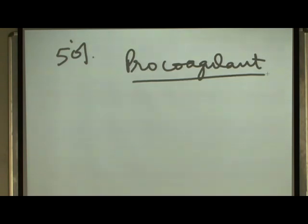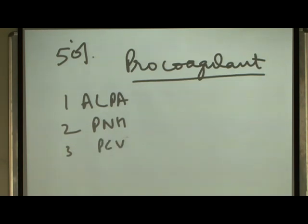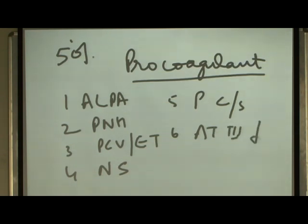Clot formation occurs in both arteries and veins. There are only a few conditions where clot formation occurs in both. The few exceptions are: number one APLA, number two PNH, third is essential thrombocytosis, fourth is nephrotic syndrome, fifth is protein C and S deficiency, and thrombin-3 deficiency. These are few conditions where we have clot formation in both arteries and veins.